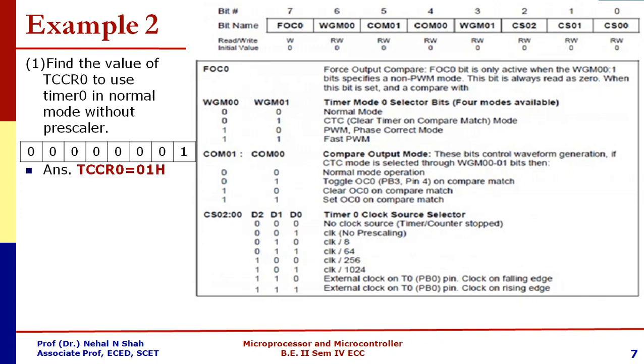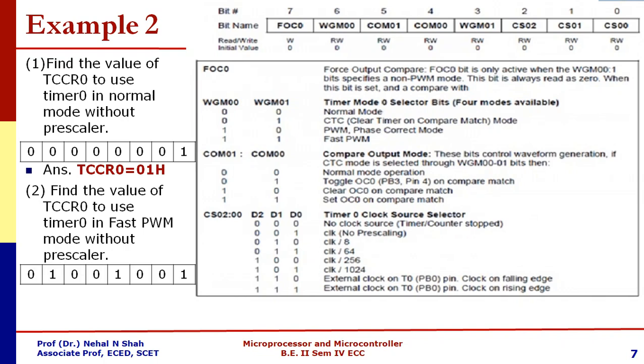Let us consider one more example: to use Timer 0 in fast PWM mode without prescaler. If we are using fast PWM mode, then WGM bits are going to be 01, but compare output mode bits will be 00. And due to no prescaler, clock select bits will be 001. This will result into TCCR0 as 49 hex.